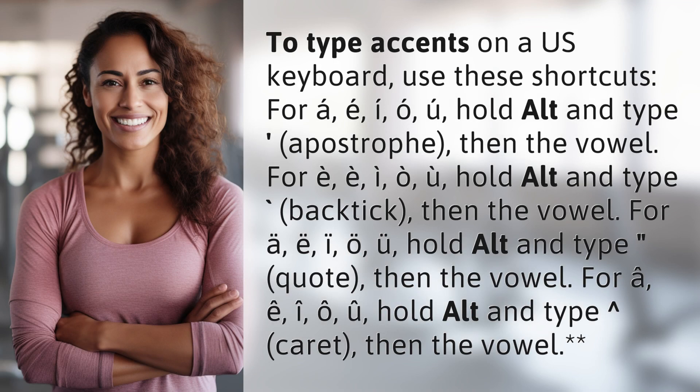To type accents on a U.S. keyboard, use these shortcuts. For the acute accent over A, E, I, O, or U, hold Alt and type apostrophe, then the vowel.